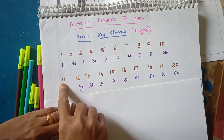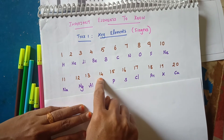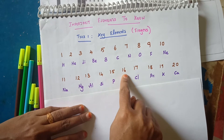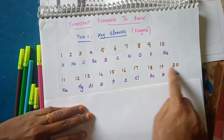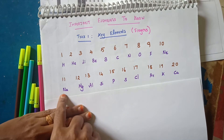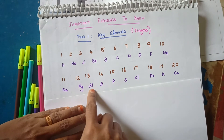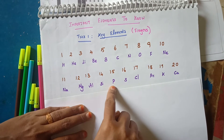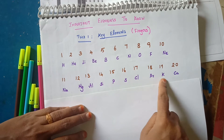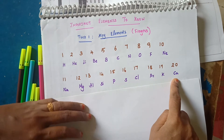Next, 11, 12, 13, 14, 15, 16, 17, 18, 19, 20. The elements are: Sodium, Magnesium, Aluminium, Silicon, Phosphorus, Sulfur, Chlorine, Argon, Potassium, Calcium.